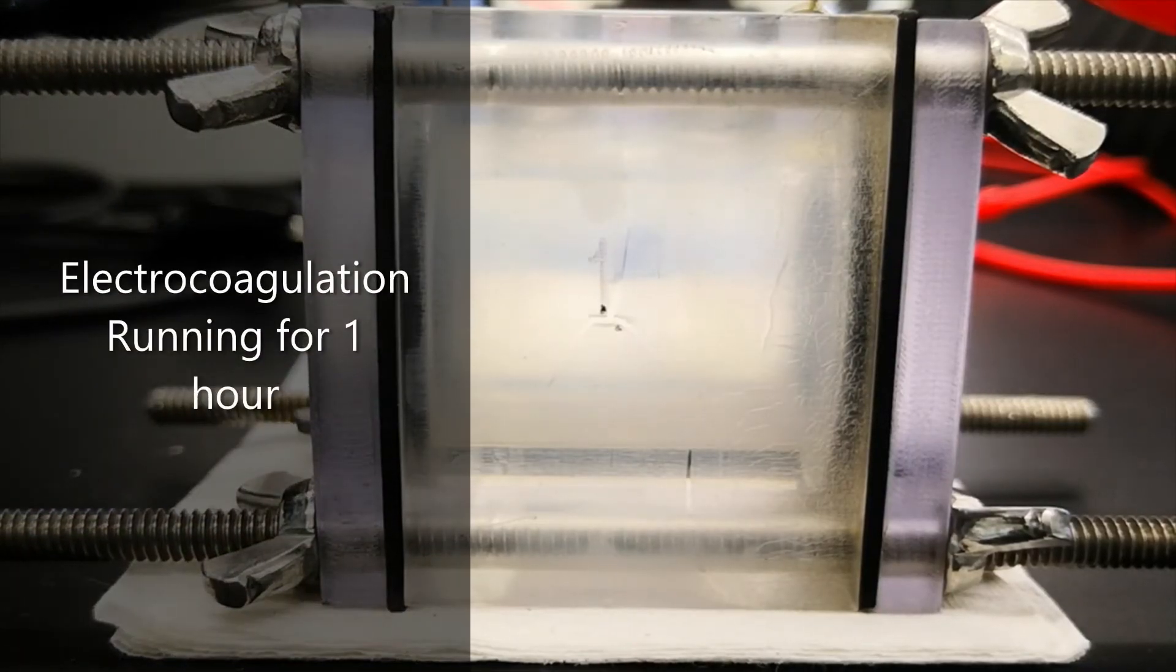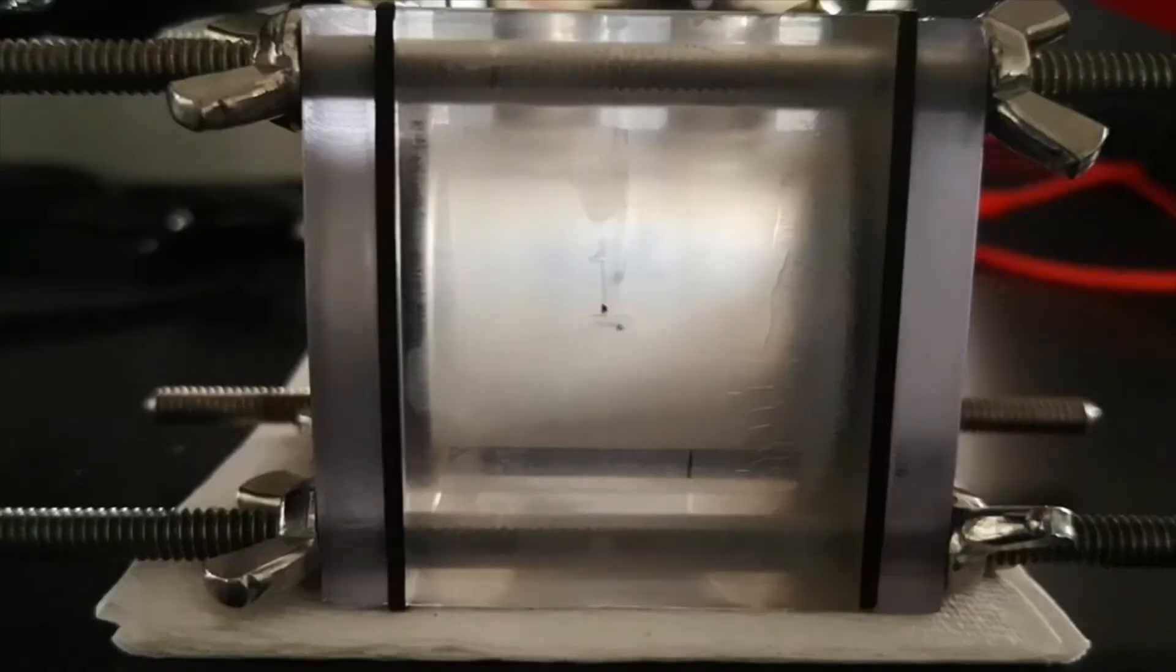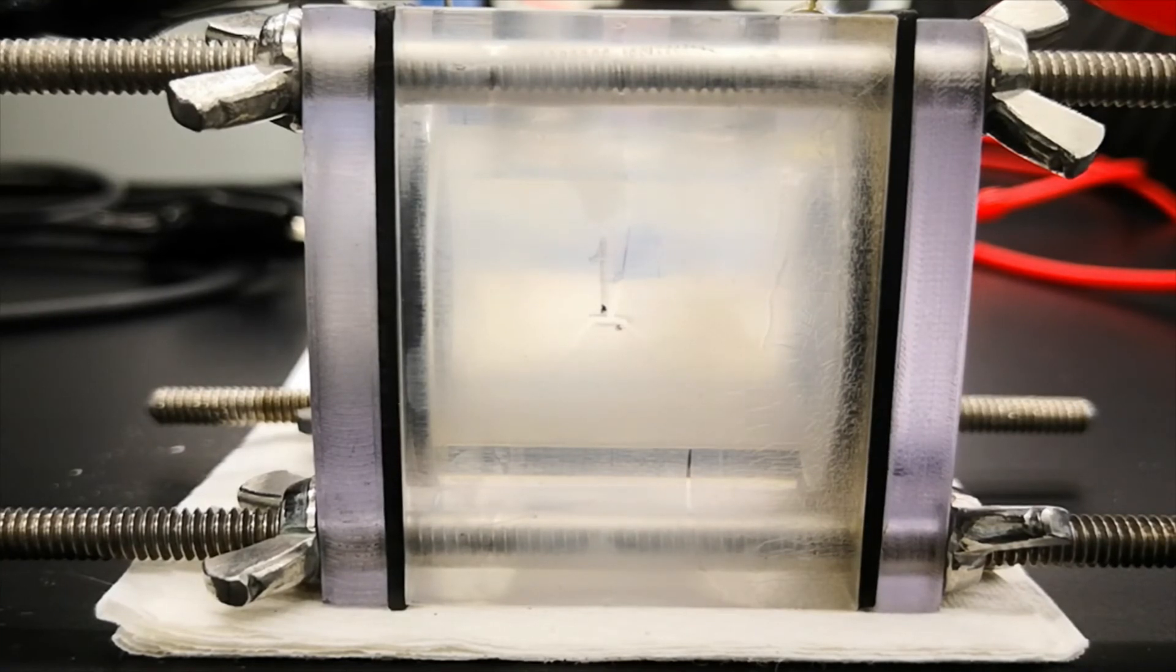This video was recorded over one hour electrocoagulation in our reactor and it's been played faster now. As you can see, some white clouds are forming in the middle of this reactor as time goes. Metal hydroxide flocs are being generated by metal oxidation and reduction reactions in the reactor.